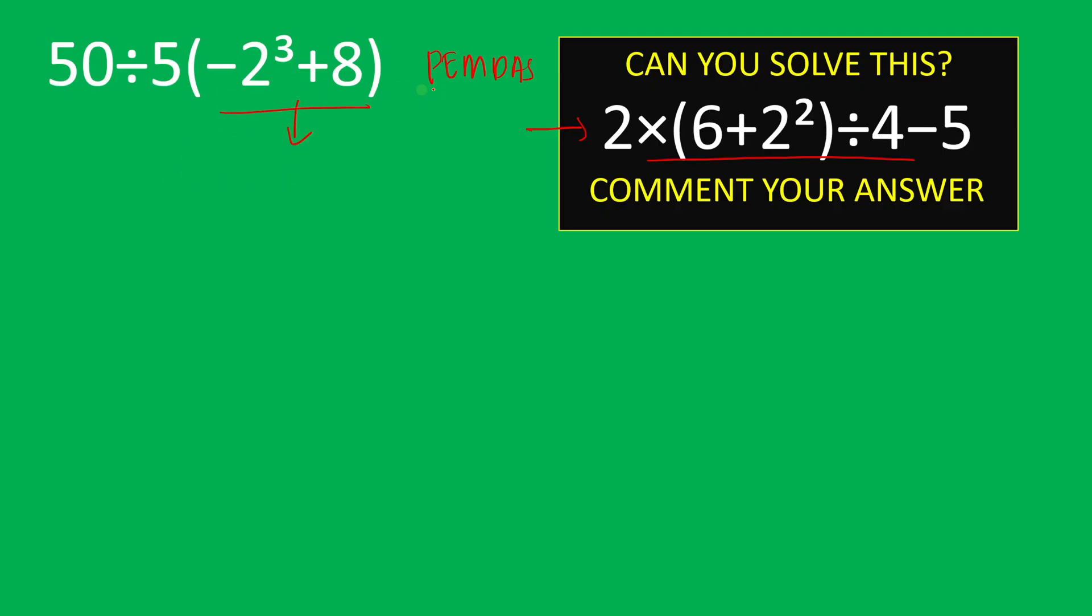And inside that, as we can see, there is an exponent part which is 2 to the power of 3. And that is 2 times 2 times 2. 2 times 2, that is equal to 4, and 4 times 2, that is equal to 8. So we can write 8 here.